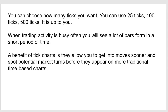You can choose how many ticks to look at — 25, 100, 500 ticks — it's up to you. When trading activity is busy, you'll see a lot of bars form in a short period. On a 100-tick chart in the E-minis you'll get bars basically every second, whereas in Euro currency one bar might form in 30 to 45 seconds or even two minutes. During slow periods, like after the 5 p.m. market reopen before Asia opens, volume is very light and you might not see many bars, unlike a minute-based chart where a new bar forms every minute regardless.